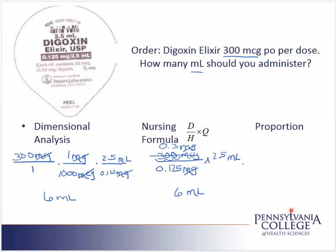I can also solve this problem using a proportion. In a proportion, I'll start with what the doctor has ordered, which is 300 micrograms. I'll place that over what I would like to end up with — I'll use an X because I don't know the answer, but I'd like to end up with milliliters. For a proportion, I'm making equal fractions, so I put an equal sign and my second fraction. My second fraction will be the strength of the medication: 0.125 milligrams over 2.5 milliliters.